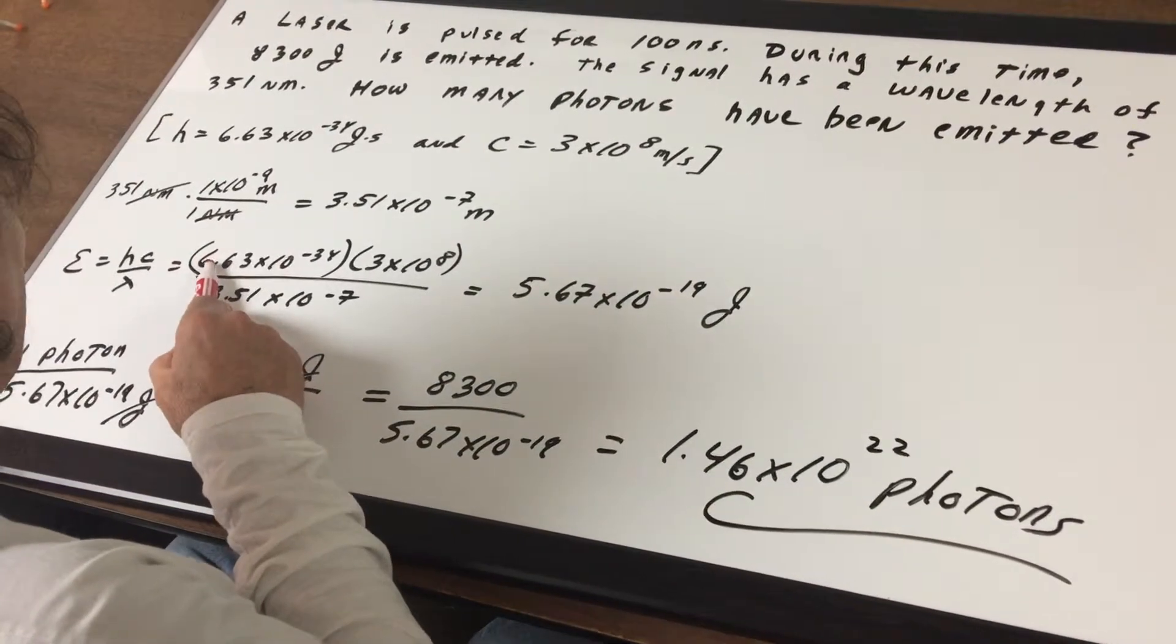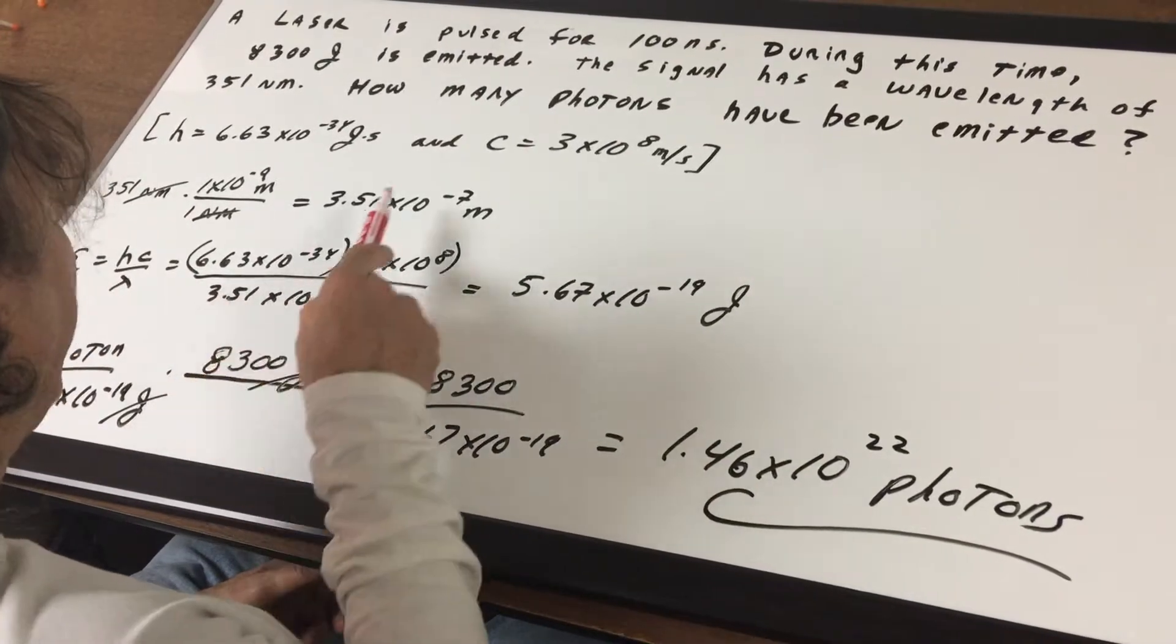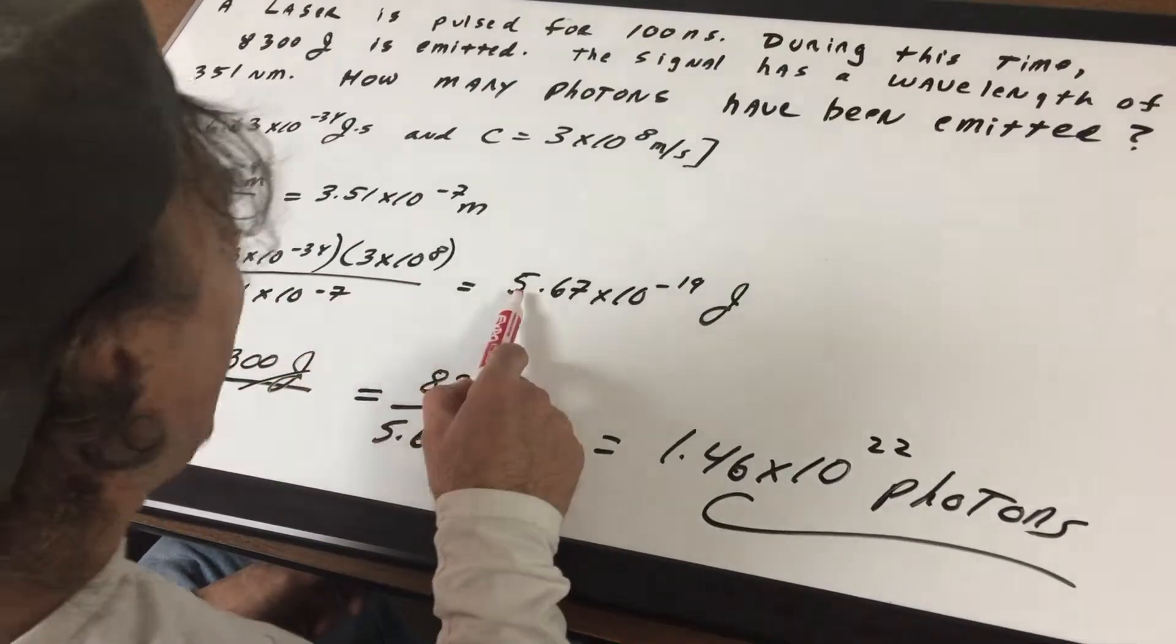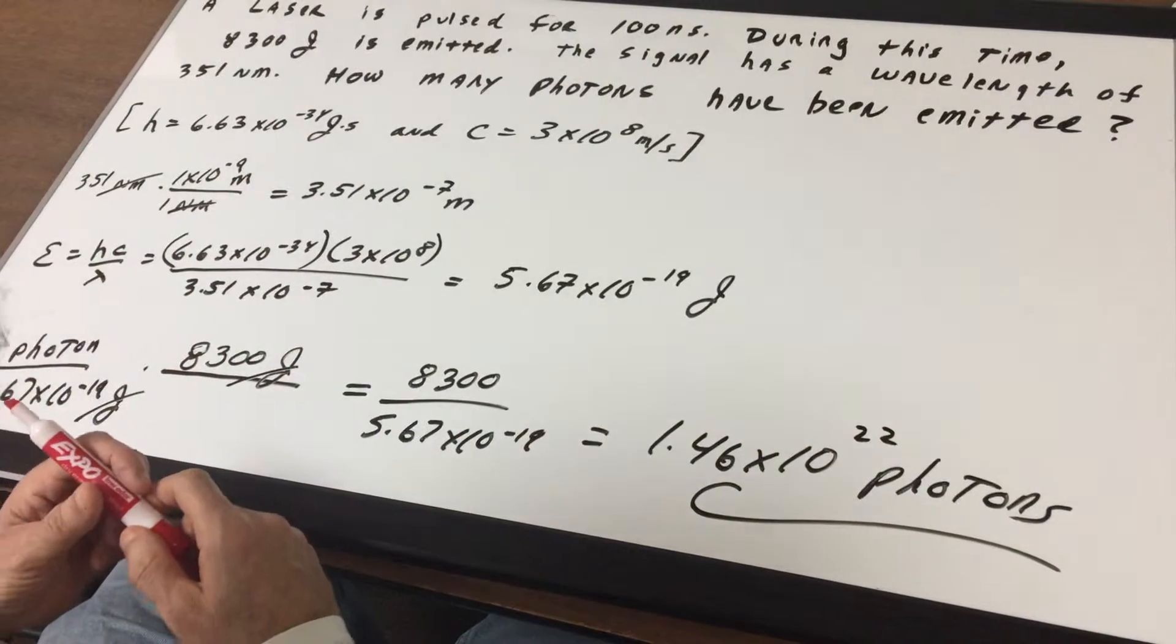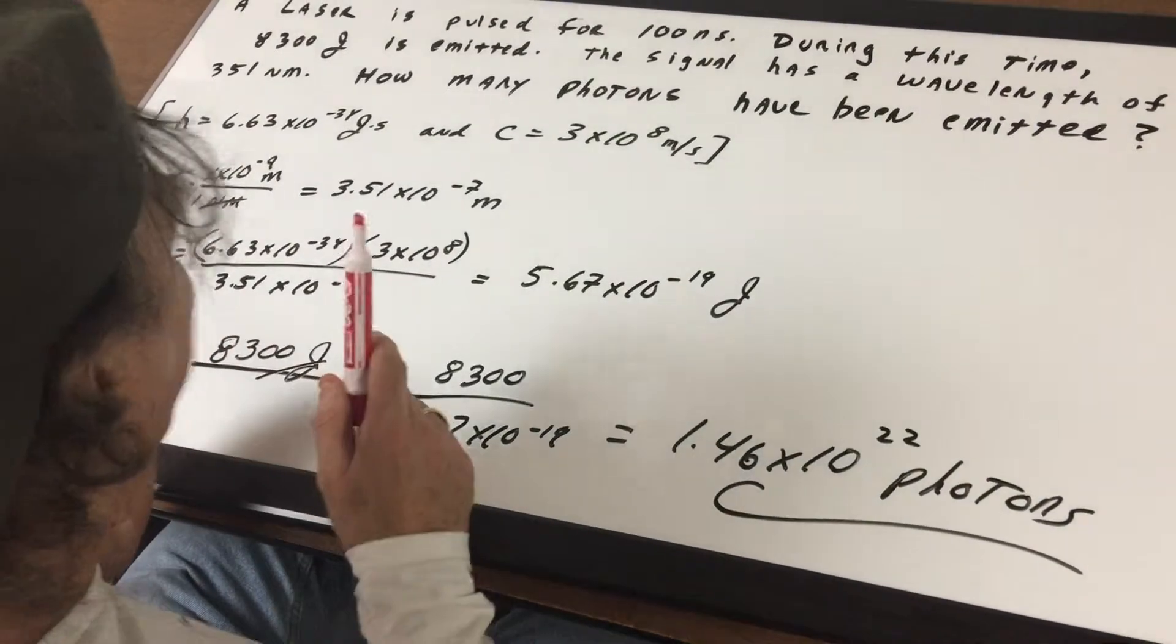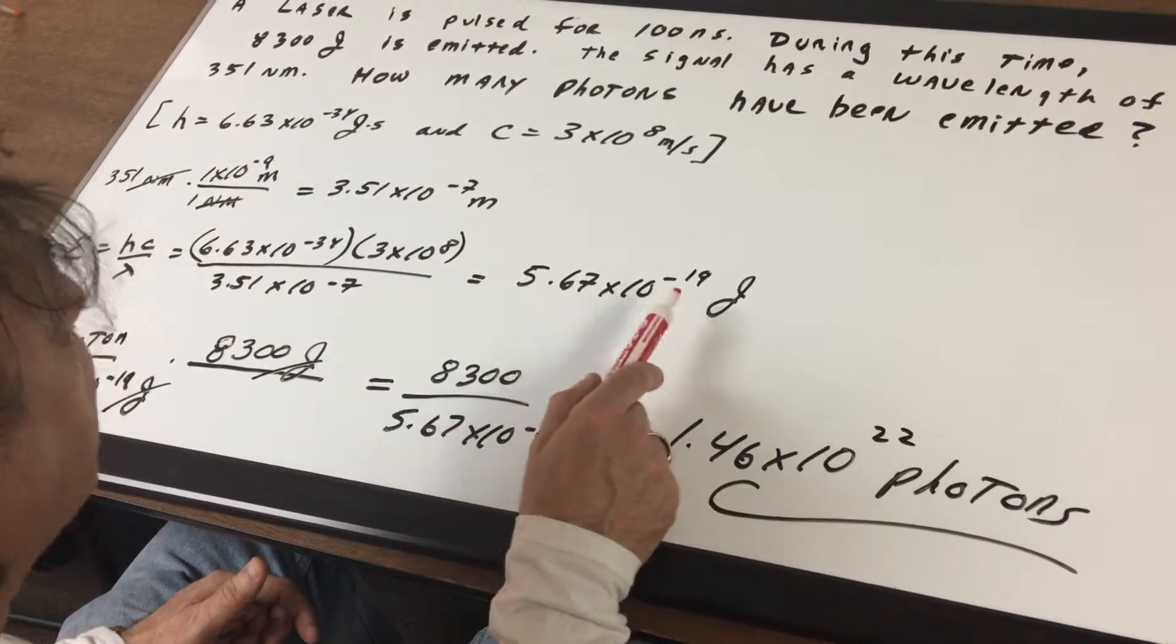Now if we put the numbers in, we got the h, we got the c, and we know the wavelength of this light was 3.51 times 10 to the minus 7. That gives me 5.67 times 10 to the minus 19 joules for this one signal, for this one photon: 5.67 times 10 to the minus 19 joules.